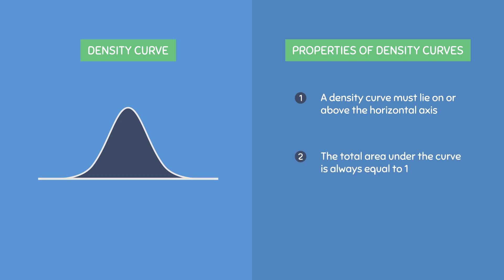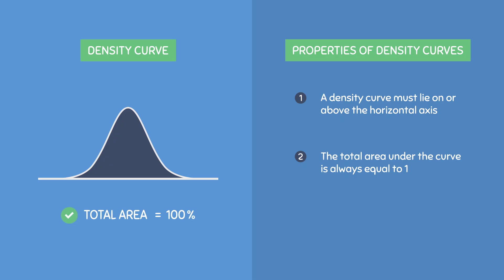The second rule is that the total area under the curve is always equal to 1. If the total area were equal to 5, 12, 70, or any number other than 1, then it is not a valid density curve. However, if the total area is equal to 1, or 100%, then it is a valid density curve. This is a very important fact and it's one worth remembering.